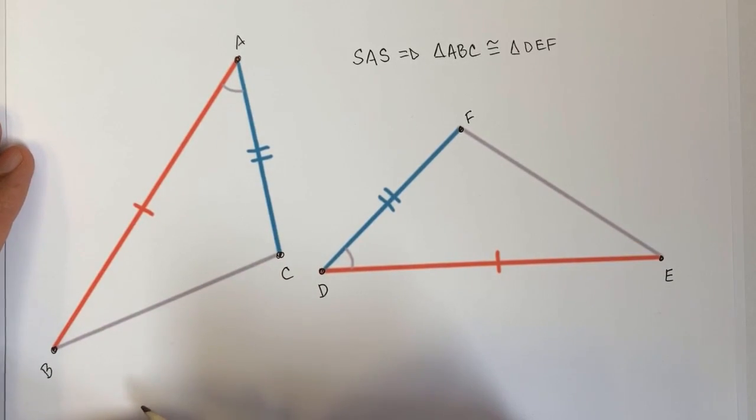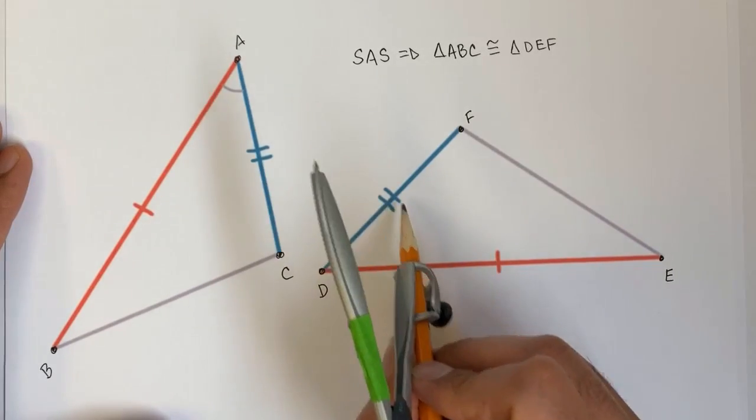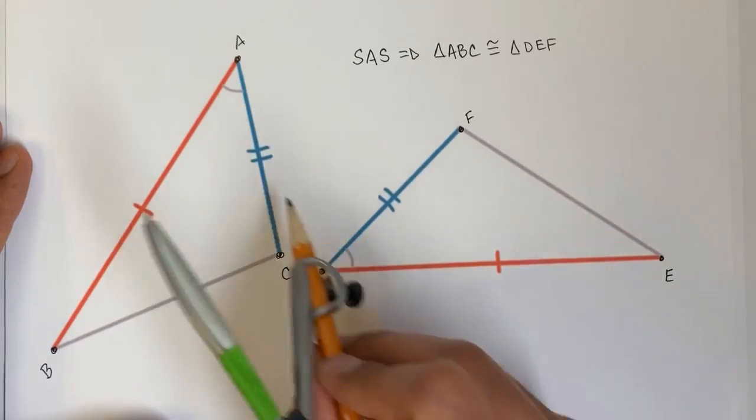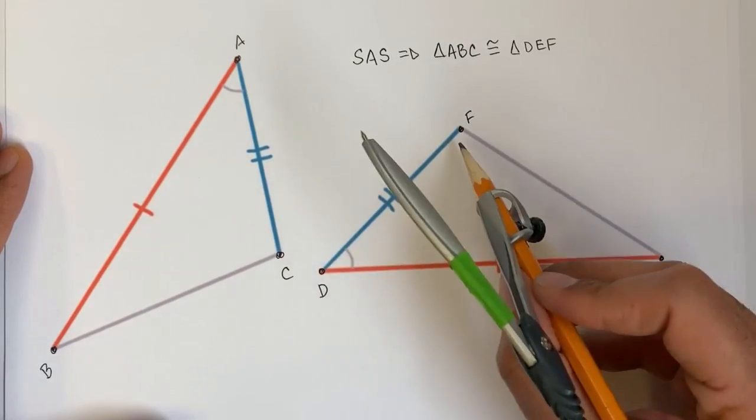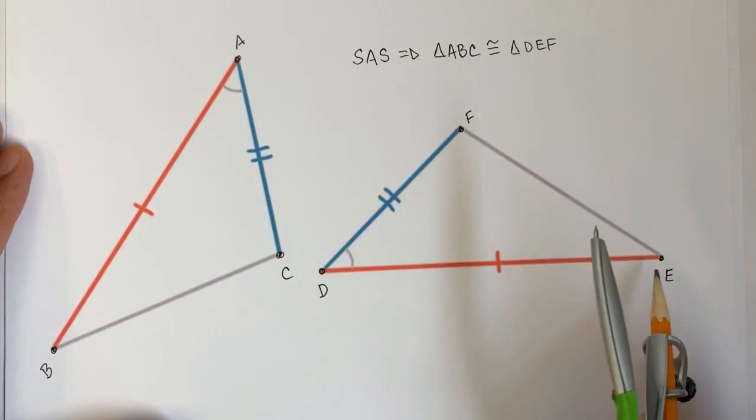What we're going to do in this video is see that if we have two different triangles and we have two sets of corresponding sides that have the same length, this blue side has the same length as this blue side here and this orange side has the same length as this orange side here.